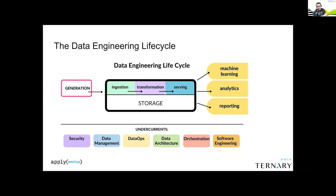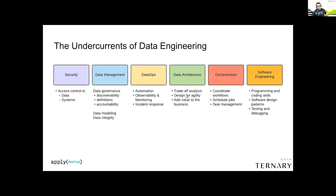But what about the undercurrents? You keep seeing things like data management, data governance, DataOps, architecture, orchestration — and you wonder where all this stuff goes. Security is a really big one. Where does security go in the life cycle? It kind of goes everywhere, frankly. Same with data management, ops, architecture, orchestration, and software engineering. These things undercut not just the data engineering life cycle but arguably any data life cycle, including the machine learning life cycle.